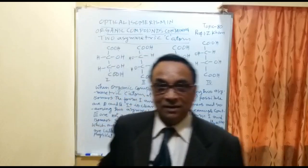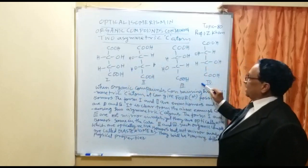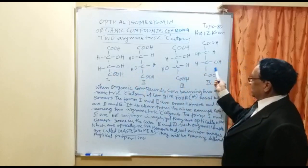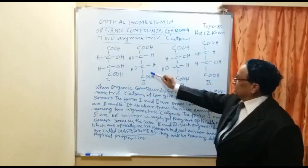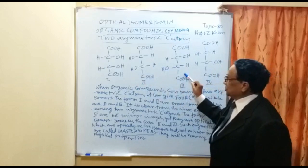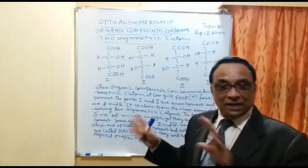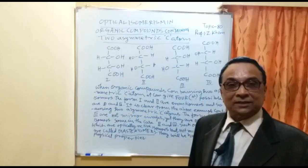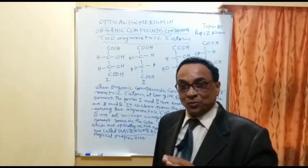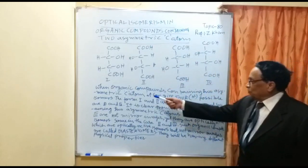Among the four forms, this one can be the mirror image of that one, and this one can be the mirror image of that one. But certain pairs cannot be mirror images of each other — those are diastereomers. So there are two types of relationships: either the out-of-four isomers are enantiomers, or they are diastereomers — not mirror images but still optically active.